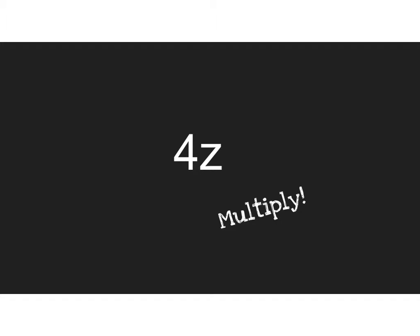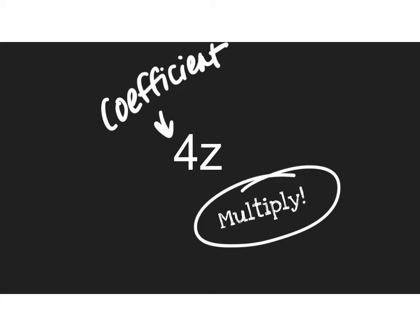Yesterday we talked about having a variable and a number right next to each other. When you see a variable right next to a number, that implies that we need to multiply. Remember, this guy has a name. The number that we're multiplying the variable by is called the coefficient. And of course, the unknown is called the variable.